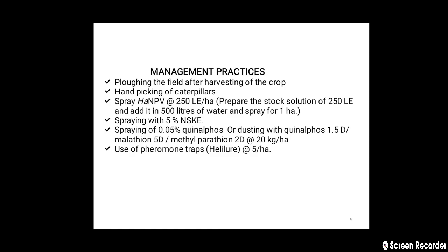Control measures: plough the field after harvesting, hand pick caterpillars, spray with Helicoverpa armigera Nuclear Polyhedrosis Virus (NPV) at 250 larval equivalents per hectare, spray with 5% neem seed kernel extract, or spray with 0.05% quinolphos. For mechanical control, use pheromone traps with Heliolure at the rate of five traps per hectare.